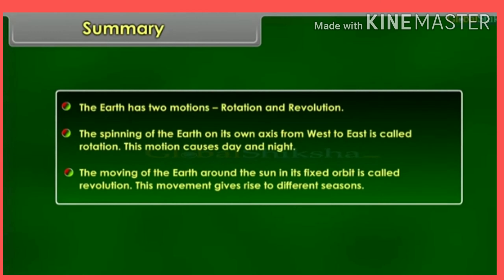Summary: The earth has two motions — rotation and revolution. The spinning of the earth on its own axis from west to east is called rotation, and this motion causes day and night. The moving of the earth around the sun in its fixed orbit is called revolution, and this movement gives rise to different seasons.